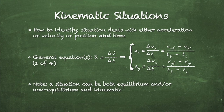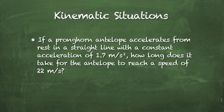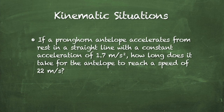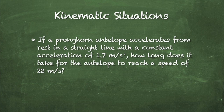Let's describe a kinematic situation. If a pronghorn antelope accelerates from rest in a straight line with a constant acceleration of 1.7 meters per second squared, how long does it take for the antelope to reach a speed of 22 meters per second? We have acceleration of 1.7 m/s², an initial velocity of zero, and a final velocity of 22 m/s — all symbols of a kinematic situation.